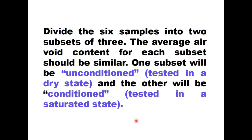Divide the six samples into two subsets of three. The average air void content for each subset should be similar, and air voids should be 7%. One subset will be unconditioned — tested in a dry state at 25 degrees centigrade — and the other set will be conditioned, tested in a saturated state.